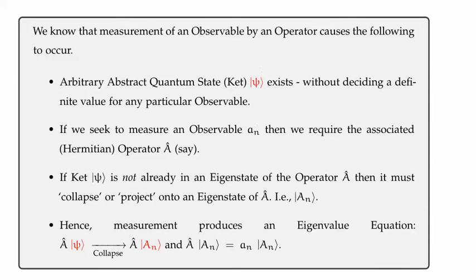So to say that again, the following is what happens when we apply an operator to measure the value of an observable. So we start with an arbitrary abstract quantum state, or a ket, which doesn't have the definite value of a particular observable.